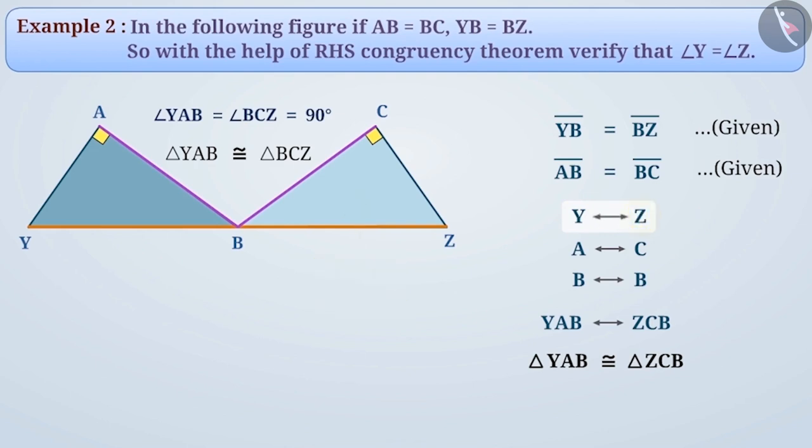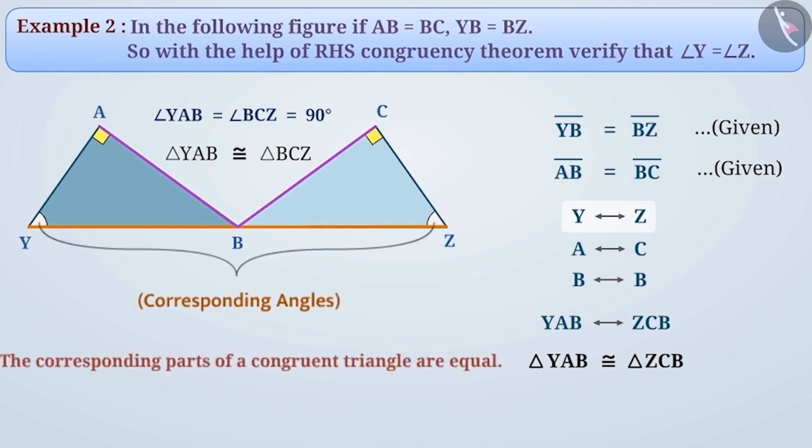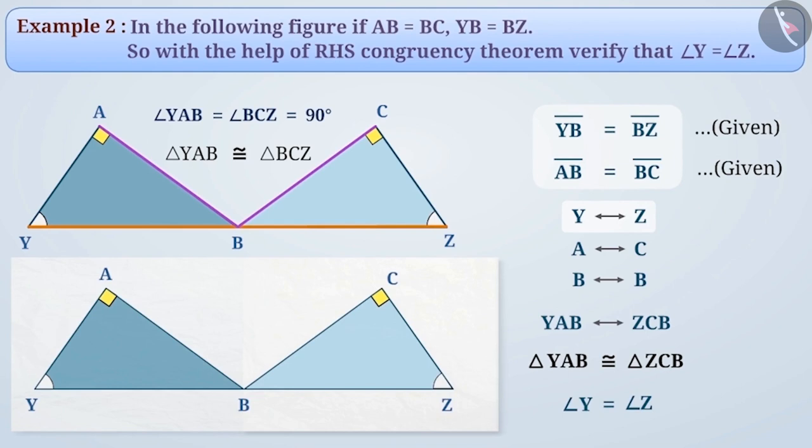Because vertex Y is corresponding to vertex Z, we can say that angle Y and angle Z are corresponding angles. Since the corresponding parts of a congruent triangle are equal, therefore we can say that angle Y equals angle Z. If we trace this shape on the trace paper and fold it on its width in such a way that the fold passes through point B, that is, place triangle YAB on triangle BCZ, then we can see that angle triangle Y fully covers angle Z, verifying that the measurements of both triangles are equal.